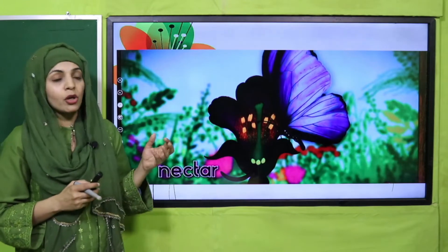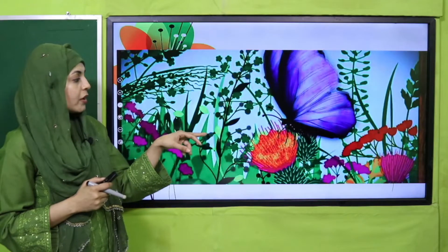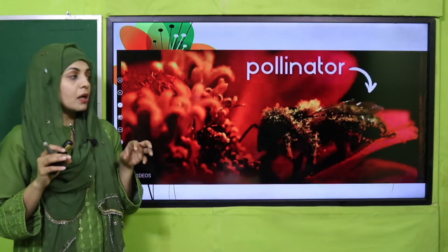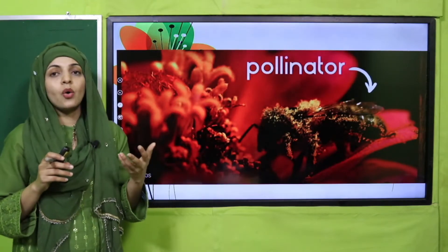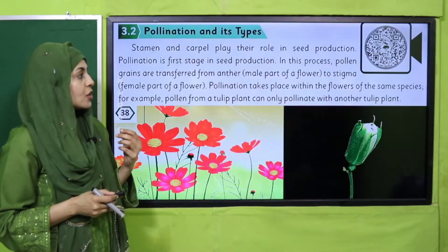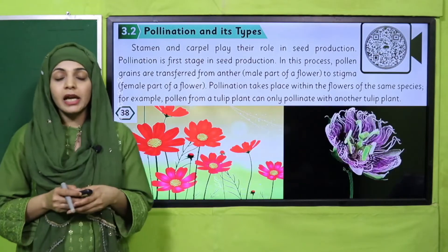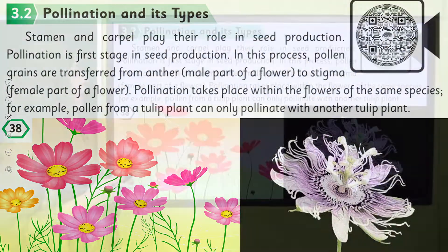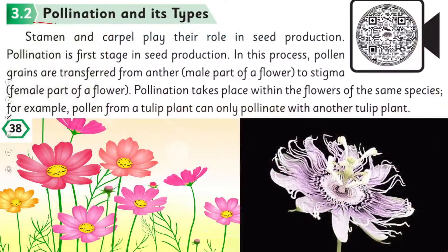Now we will discuss pollination. Insects drink nectar from flowers for their food. When they sit on flowers, pollen grains get attached to their legs. When they move to the next flower, pollination occurs. My dear students, please open page number 38 in your Science 5 books. Let's start reading and discuss about pollination.